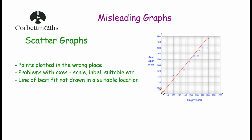Another problem might be that the axes are drawn incorrectly — look out for those scales. Here the vertical axis goes 100, 110, 120 up to 190, and the horizontal axis goes 110, 120, 130 up to 160 — both look fine. But it's important to make sure the scale is suitable. Going up in tens makes sense for arm span in centimetres; it wouldn't make sense to go 100, 200, 300, 400 because all the points would be really closely packed together. So make sure you have a suitable scale for your axes.